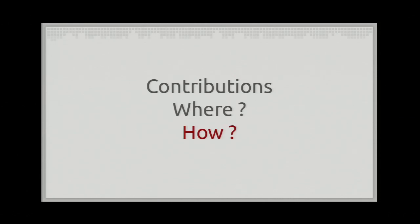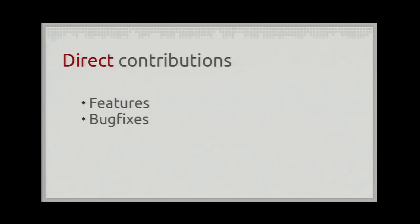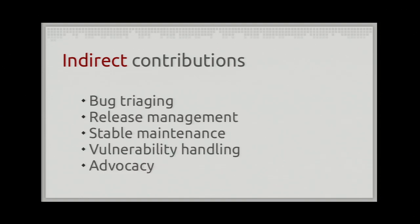Another way to look at contributions is the form they take. One form is what I call direct contributions - the obvious contributions. There is a new feature or a new bug fix, contributions that will end up in the code of the project. And also indirect contributions, like bug triaging - making sure that all the incoming bug reports are triaged and prioritized correctly. There is release management, which is making sure that we deliver something at the end of those six months and that all the development process follows the right cadence and rhythm.